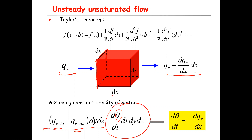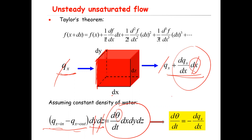For qx in, we know it is qx; for qx out, it is qx plus the derivative term. So qx minus qx out gives minus dqx over dx times dx. The dx dy dz terms cancel, and all we have left is d theta over dt — the derivative of water content with respect to time — equal to minus the derivative of qx with respect to x.